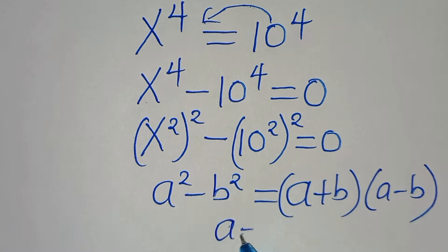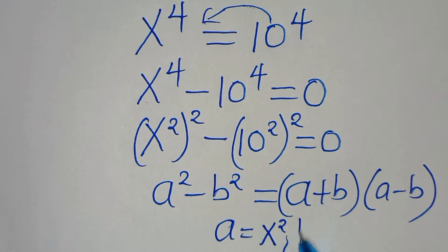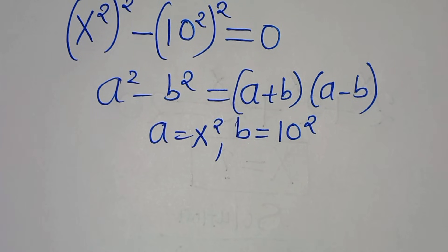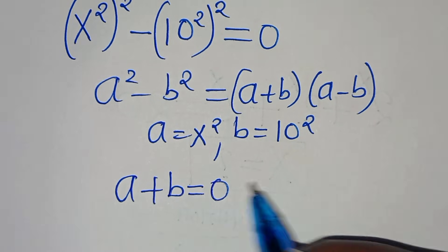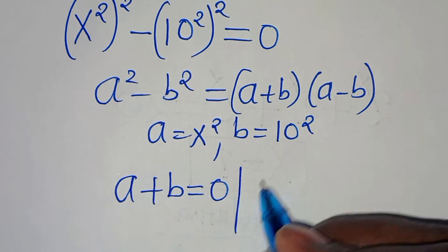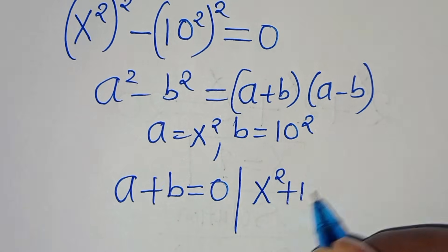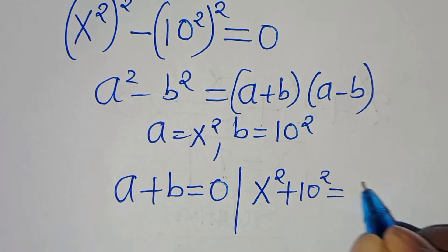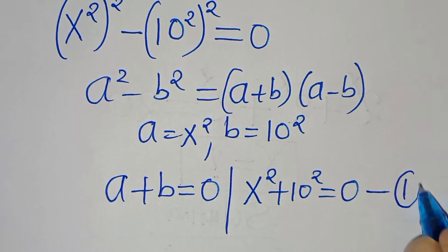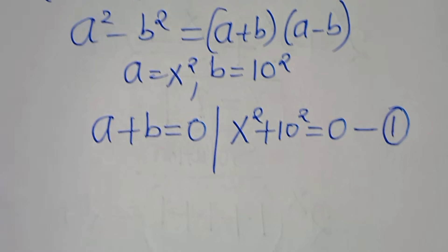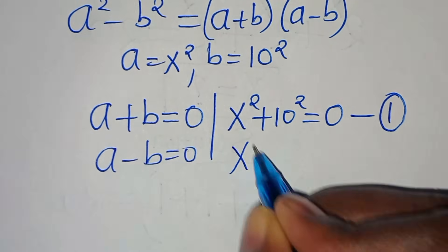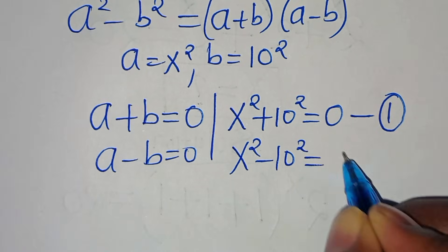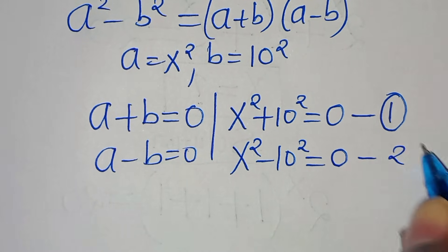In our case, a is equal to x to the power of 2 and b is equal to 10 to the power of 2. So we have that a plus b equals 0, which is x squared plus 10 squared equals 0 — let's call this case 1. And we have that a minus b equals 0, which is x squared minus 10 squared equals 0 — let's call this case 2.